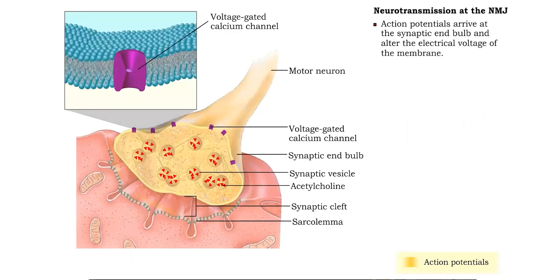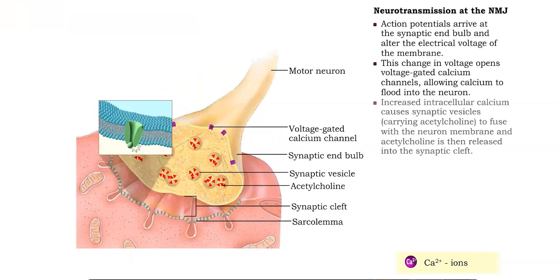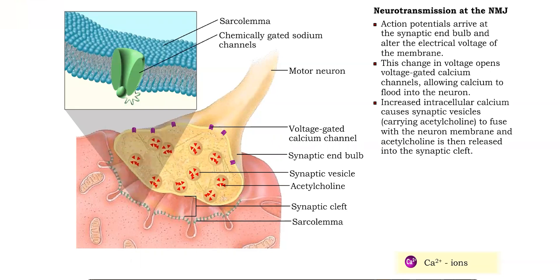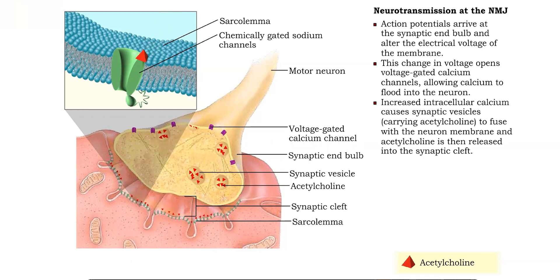As the action potential arrives at the neuron's synaptic end bulb, it causes a depolarization of the motor end plate. This change in voltage opens calcium channels and allows calcium ions to rush into the neuron. This influx of calcium ions causes the synaptic vesicles in the neuron to fuse with the membrane, thereby releasing the neurotransmitter acetylcholine into the synaptic cleft.